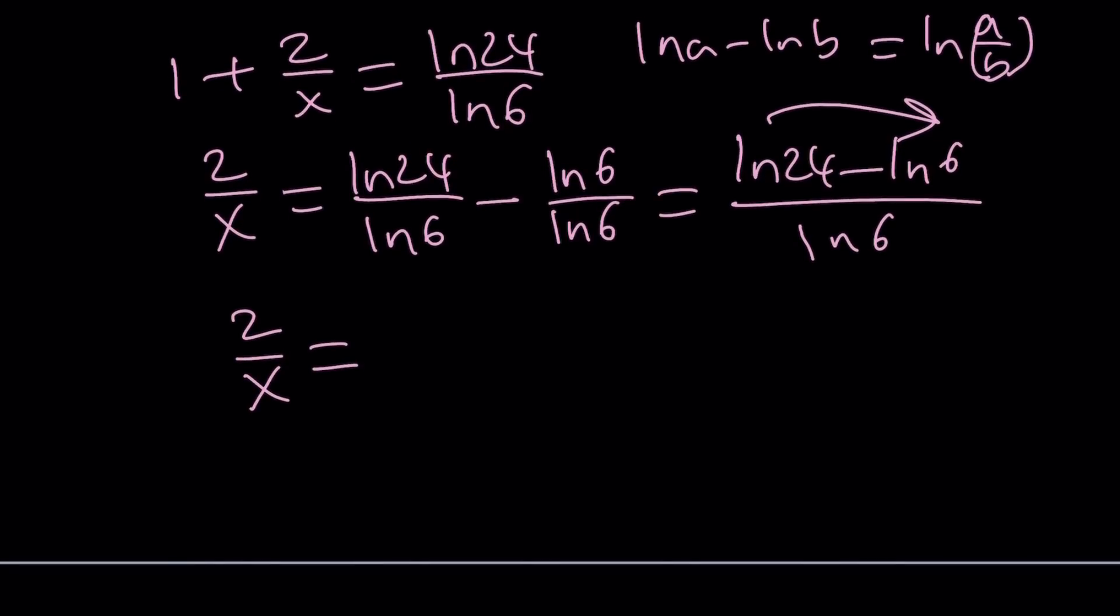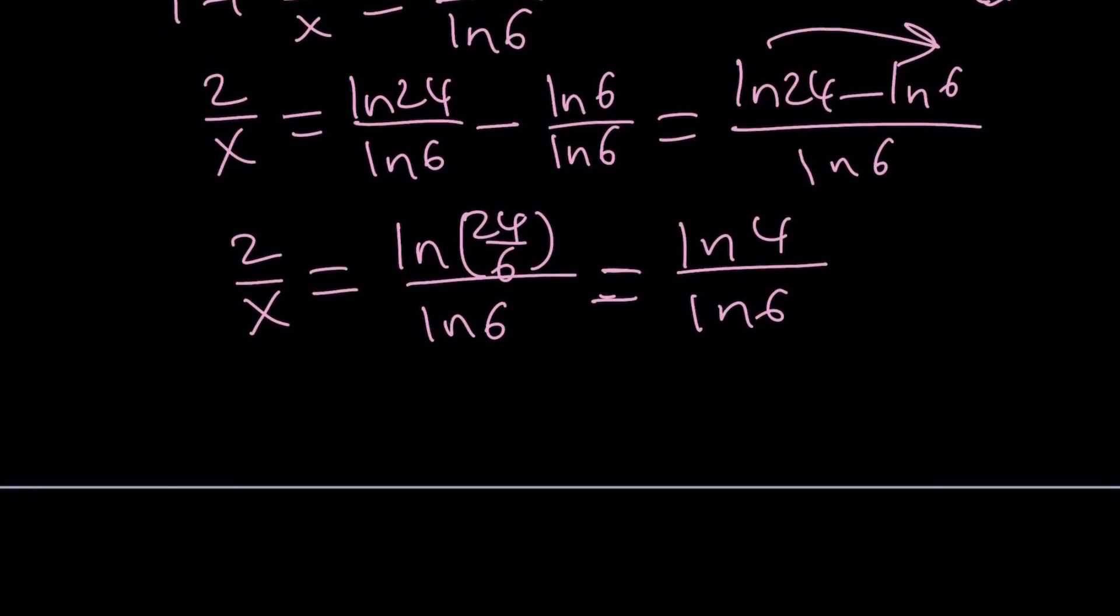Well, if they're positive, then B can't be 0, right? So here ln 24 minus ln 6 is going to be ln 24 over 6. And obviously that's divided by ln 6, but this is ln 4. And now I have 2 over x.